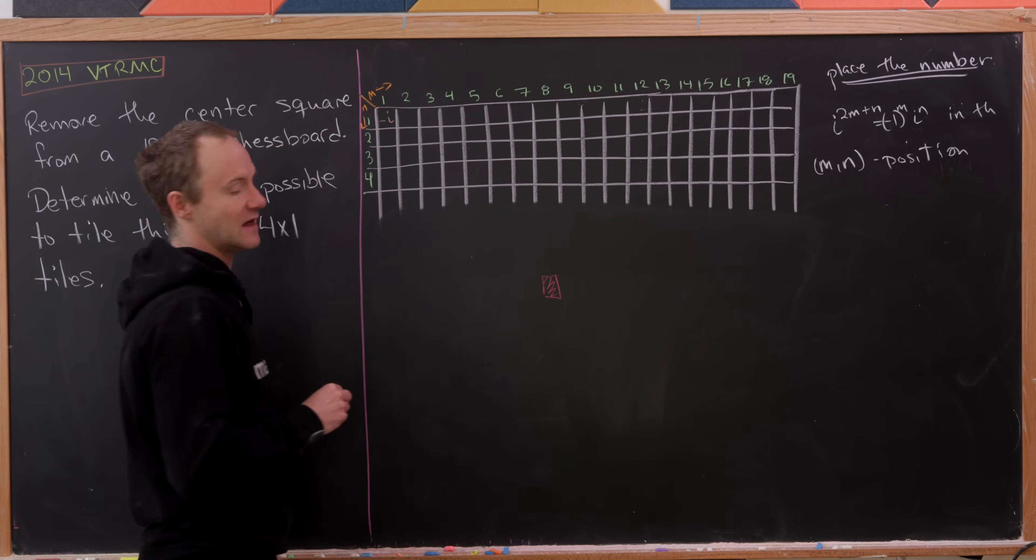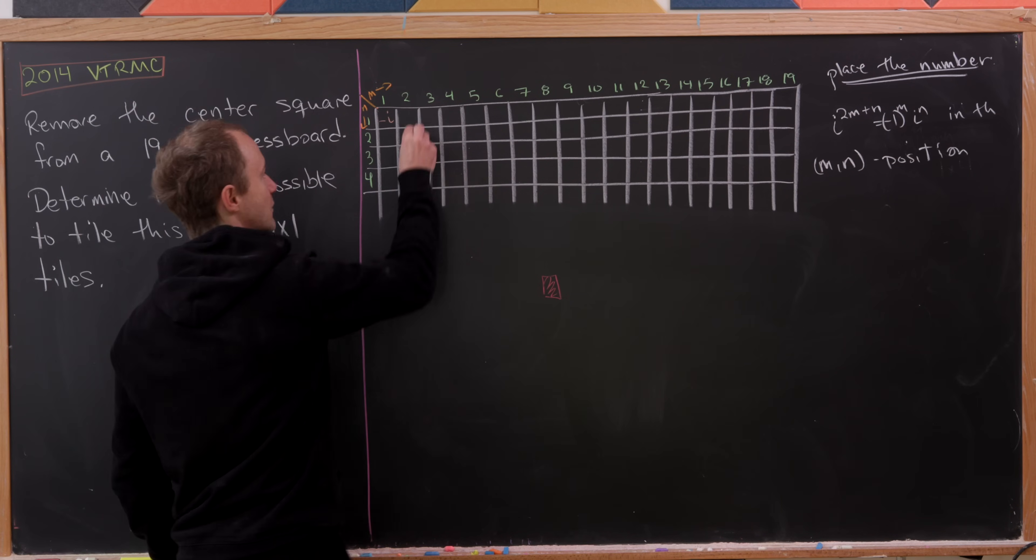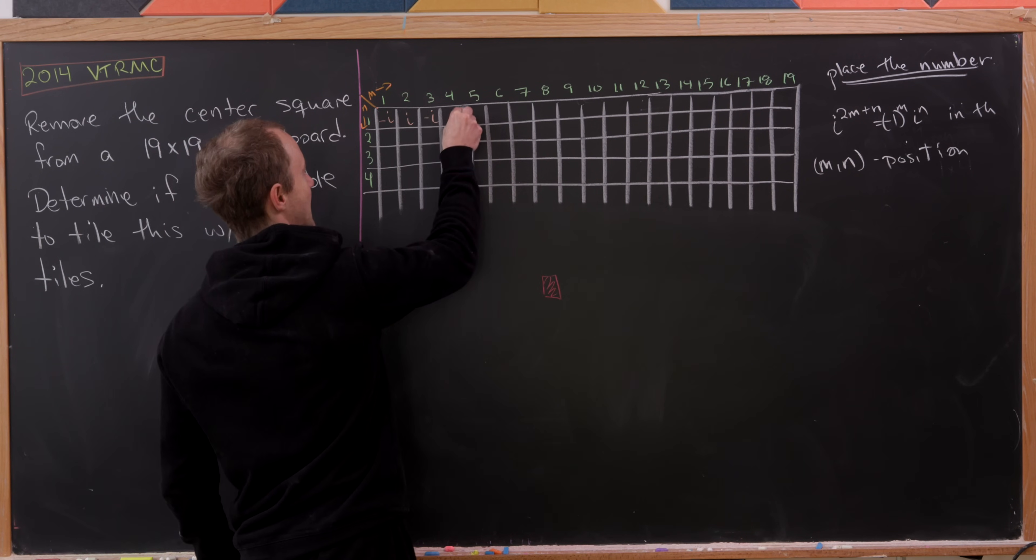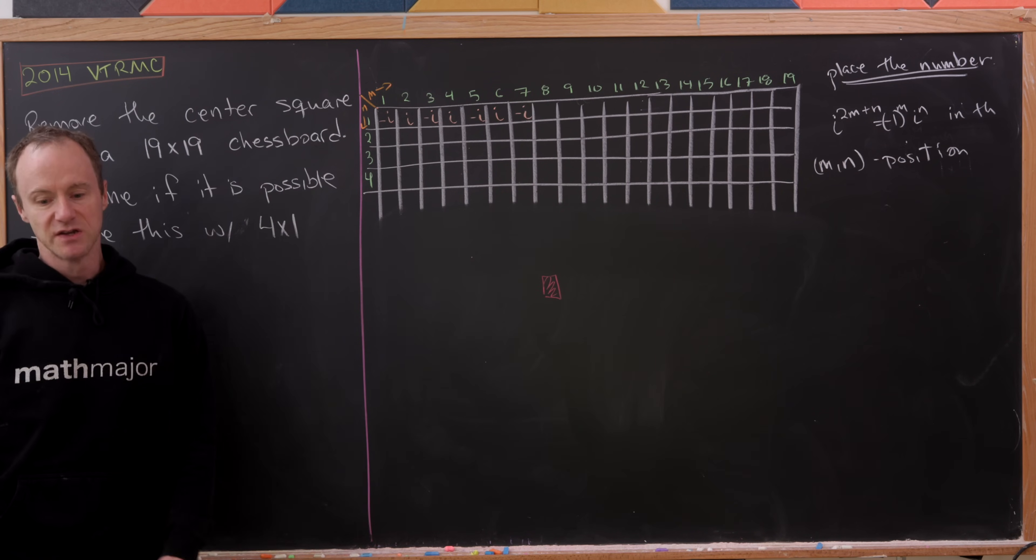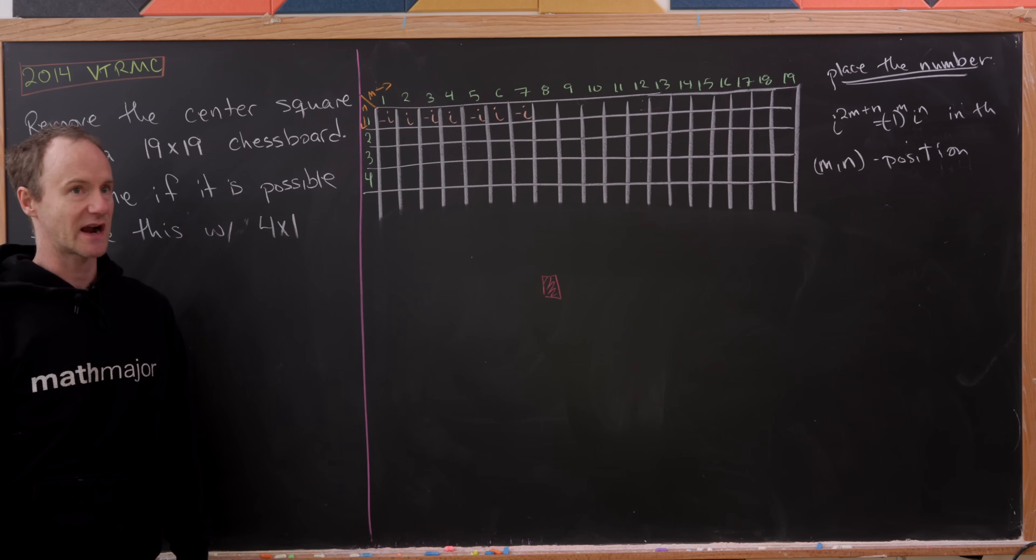And then we would have an i, a minus i, an i, a minus i, an i, a minus i, and so on and so forth. So let's observe that we're in fact simply alternating i's or minus i's.